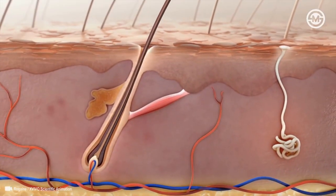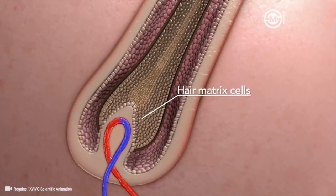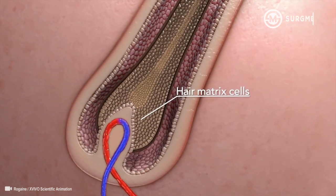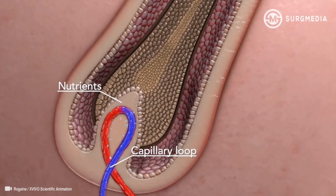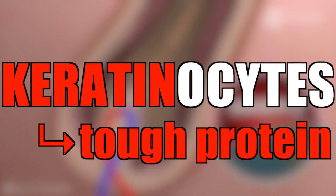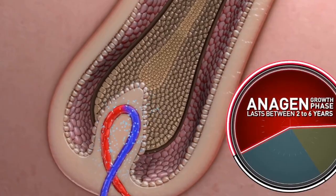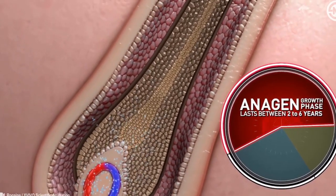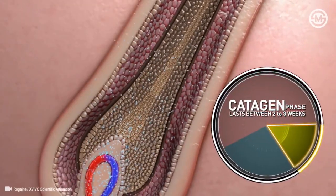Before answering these questions, it's first important to look at the anatomy of the skin. The skin contains tiny sacs called hair follicles. Hair follicles contain a hair matrix, which consists of stem cells that proliferate and differentiate into keratinocytes. Keratin is a tough protein that forms hair, nails, and the outer layer of the skin. As more cells are formed, keratinocytes are pushed upwards, flatten, and die, forming the hair shaft.